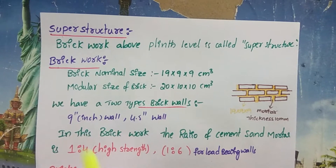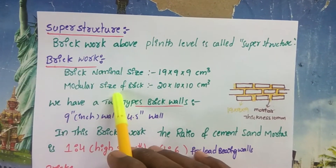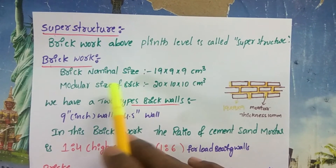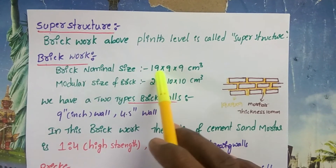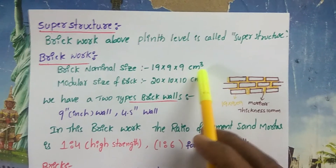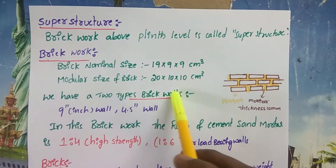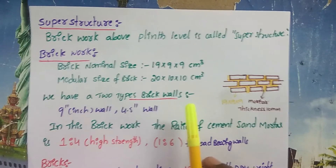For brickwork, we have two types of brick sizes: nominal size and modular size. The nominal size is 19 x 9 x 9 cm, and the modular size of a brick is 20 x 10 x 10 cm.